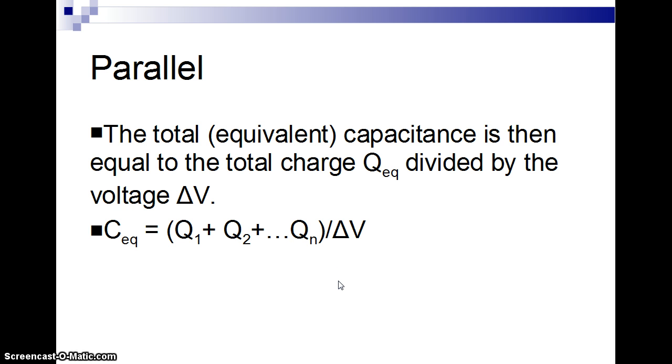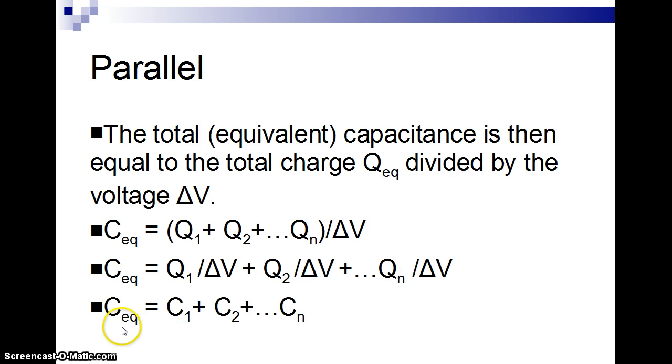The equivalent capacitance is all the charges added up divided by the voltage, but I can distribute that dividing by the voltage to each one. So the equivalent is charge one over voltage, charge two over voltage, all the way up to the last one. But if we just look at Q1 divided by ΔV, charge divided by voltage on that first capacitor, that's just the first capacitance. Q2 over ΔV is the second capacitance, all the way to the nth capacitance.